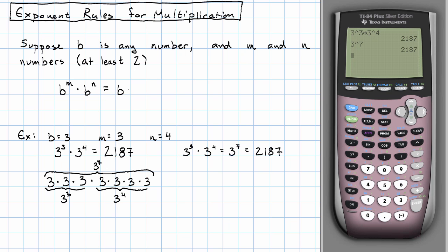We'll have b multiplied by itself with m copies, and then that same number multiplied by itself with n copies. If I write m copies and then n copies, that is indeed going to be m plus n copies.